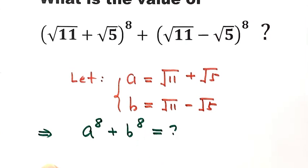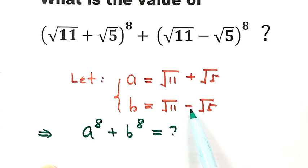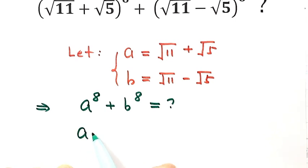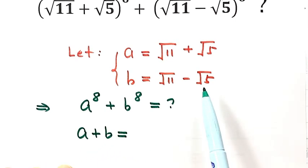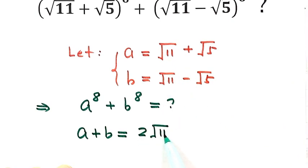First, let's take a look at A and B. What's the difference between A and B? The only difference is one has a plus and one has a minus. So let's see what A plus B is. Then A plus B — the √5 terms cancel — leaving just 2 times √11. We'll label this Result 1.